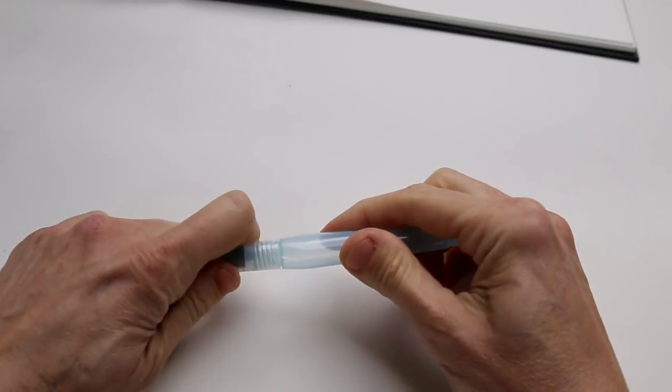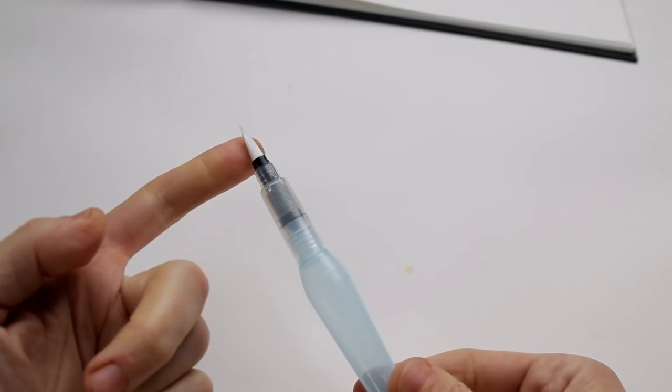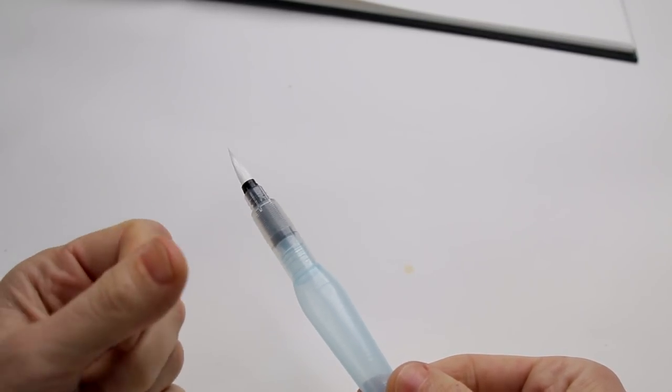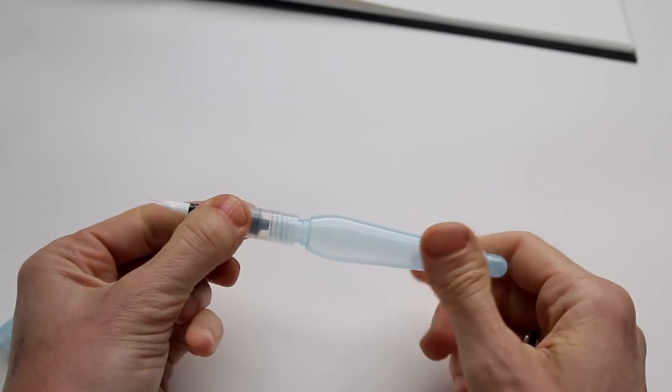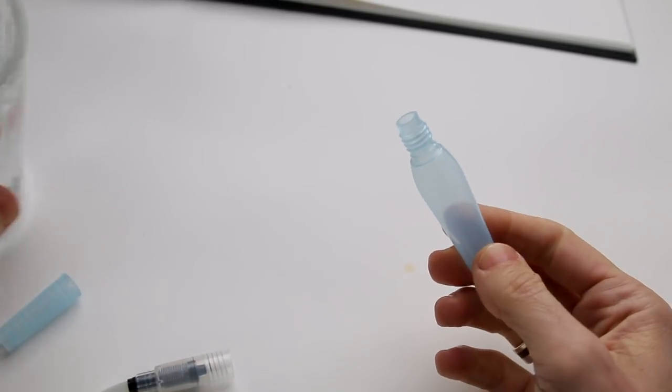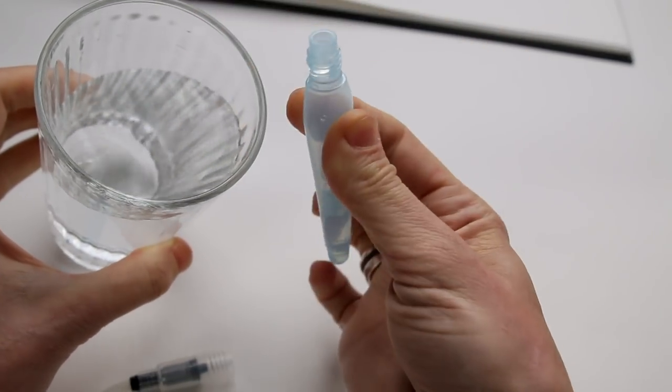The water brush is kind of an ingenious thing. The brush itself is synthetic, but it's quite soft and it works really well. The handle of the brush is actually a container that holds the water. So you fill it with water. You can fill it from a glass, which I'm doing here.